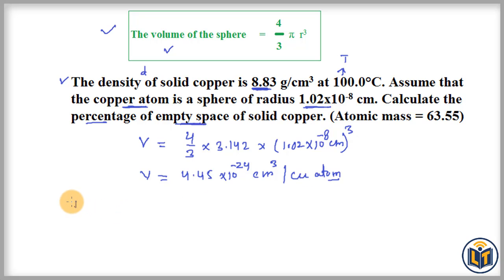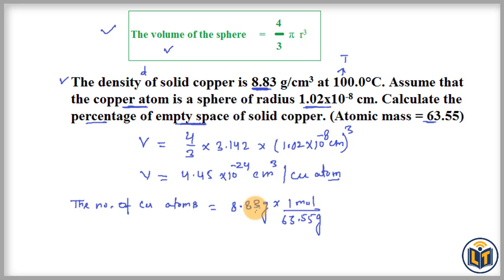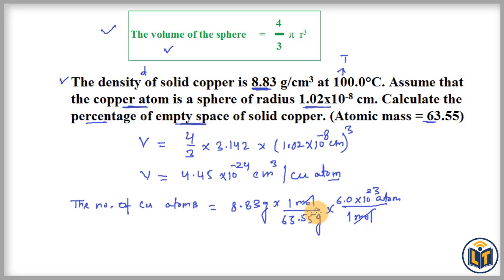We calculate the number of copper atoms as follows: number of copper atoms = 8.83 grams × (1 mole / 63.55 grams) × (6.0 × 10²³ atoms / 1 mole). We arrange the setup so the same units cancel — grams cancel with grams, and moles cancel with moles. This uses Avogadro's number.